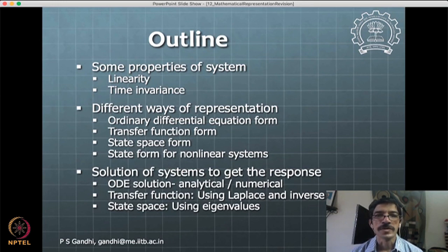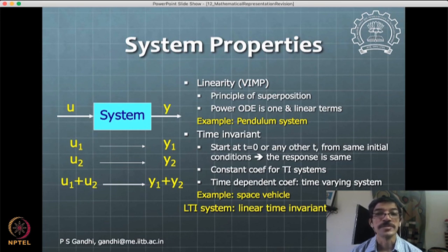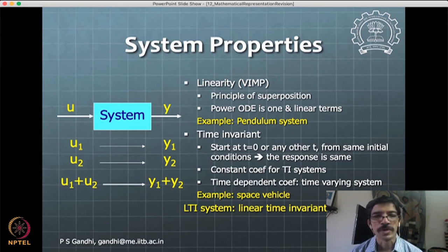We begin with simple properties which you already know. The linearity of a system — the principle of superposition is valid for linear systems. If a system is given input u1 and produces output y1, and input u2 produces output y2, then if these inputs are scaled and added or subtracted, correspondingly the outputs will get scaled and added and subtracted.